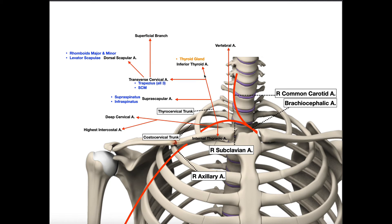After giving off those branches, the thyrocervical trunk continues as the inferior thyroid artery. The inferior thyroid artery, along with the superior thyroid artery which comes off at a different point, supplies the thyroid gland — an endocrine gland that produces thyroid hormones.